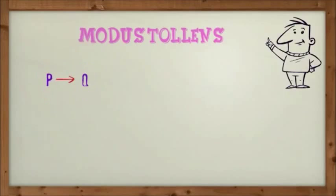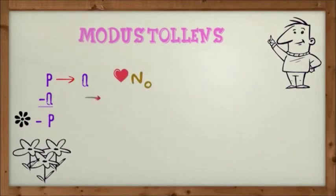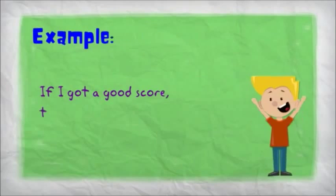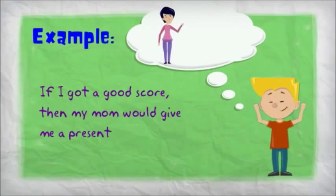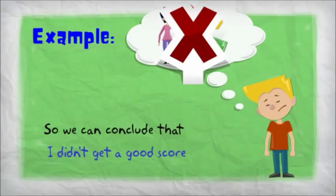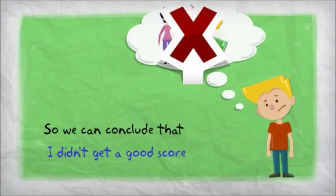The second is modus tollens. Let's check the example. If I got a good score, then my mom would give me a present. But the fact is my mom wouldn't give me a present. So we can conclude that I didn't get a good score.